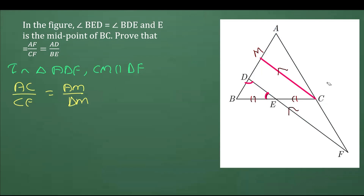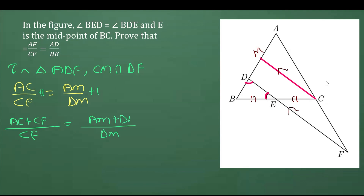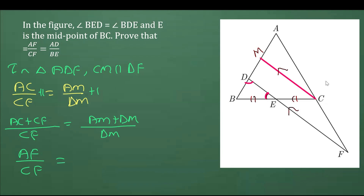We need to add 1 to both sides to get the required ratio. Taking LCM on both sides: the left side becomes AC plus CF over CF, and the right side becomes AM plus DM over DM. In the figure, AC plus CF is AF, and AM plus DM is AD. So we get AF over CF equals AD over DM.